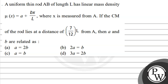Let's read our question first. A uniform thin rod AB of length L has a linear mass density μ(x) = A + Bx/L, where x is measured from A. If the center of mass of the rod lies at a distance of 7/12 of L from A, then A and B are related as?